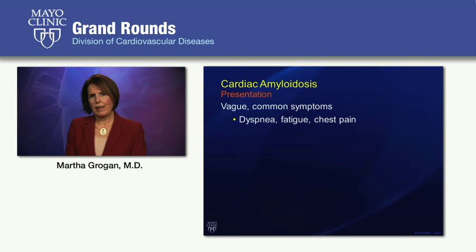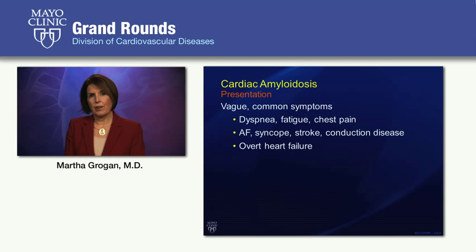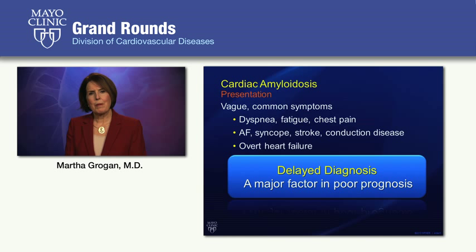Patients may have valvular heart disease. Atrial fibrillation is a common manifestation, particularly in patients with senile amyloidosis. Syncope, stroke, and conduction system disease all may occur. Many times, by the time patients get diagnosed and present to a cardiologist, they have developed overt heart failure.